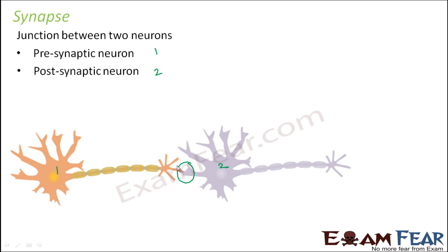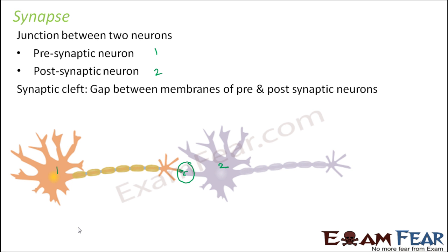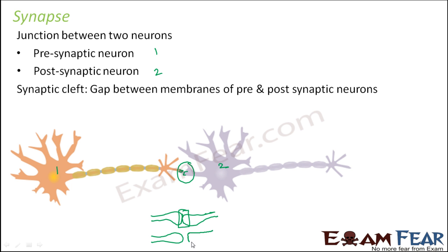The synapse is formed by the membrane of the pre-synaptic neuron and the post-synaptic neuron. If you magnify this portion, this is the membrane of the pre-synaptic neuron and this is the membrane of the post-synaptic neuron. In some cases there might be a gap between these two membranes, and that gap is known as the synaptic cleft — the gap between the membranes of the pre- and post-synaptic neuron.